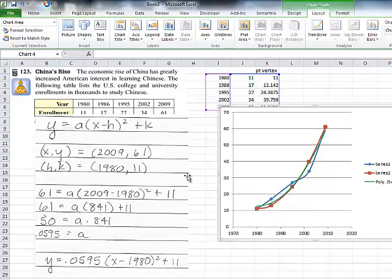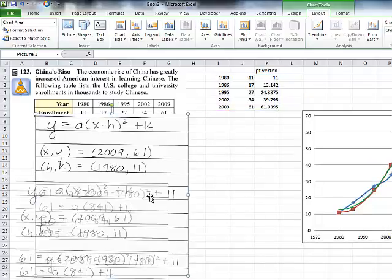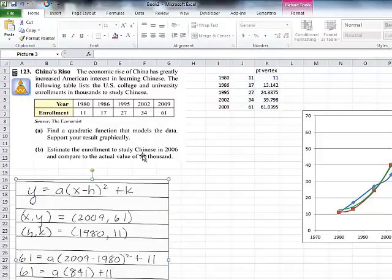So in this case now, what we want to say is, what would we expect to have happen? It says here, what would we expect to have happen in 2006?